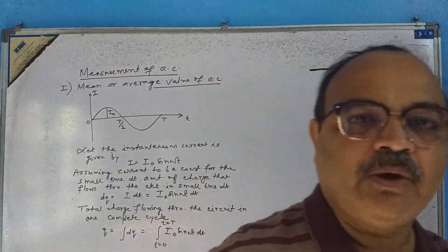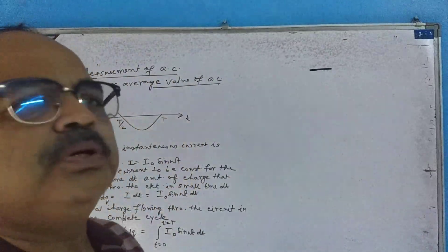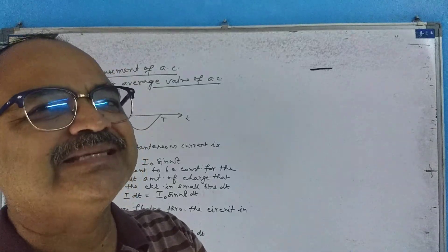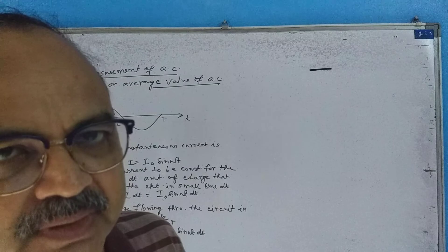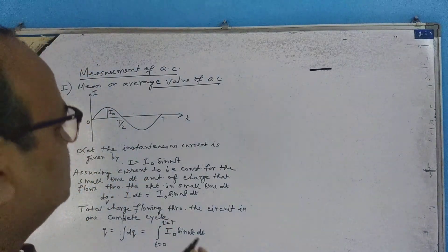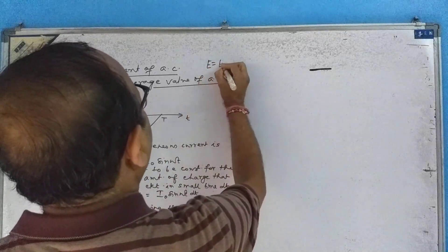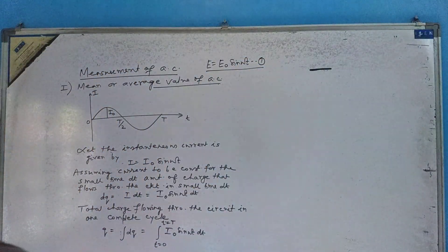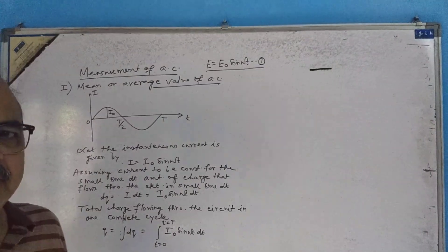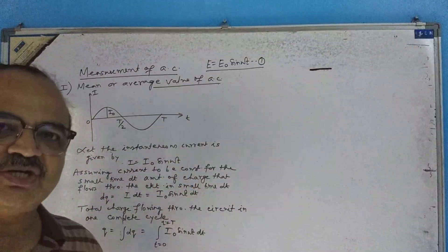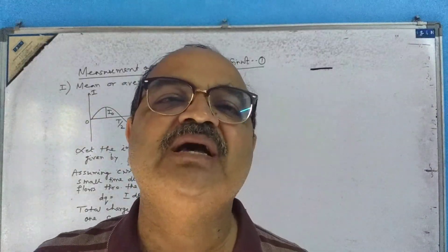Good morning students. I hope you have done the portion we covered in AC. We discussed the AC generator, and our discussion found that E is equal to E naught sine omega t — that is our basic equation. I told you before regarding this. In the last class I already told you that AC has this form, given by the sine function. In our syllabus we will always be using the sine function to represent AC.